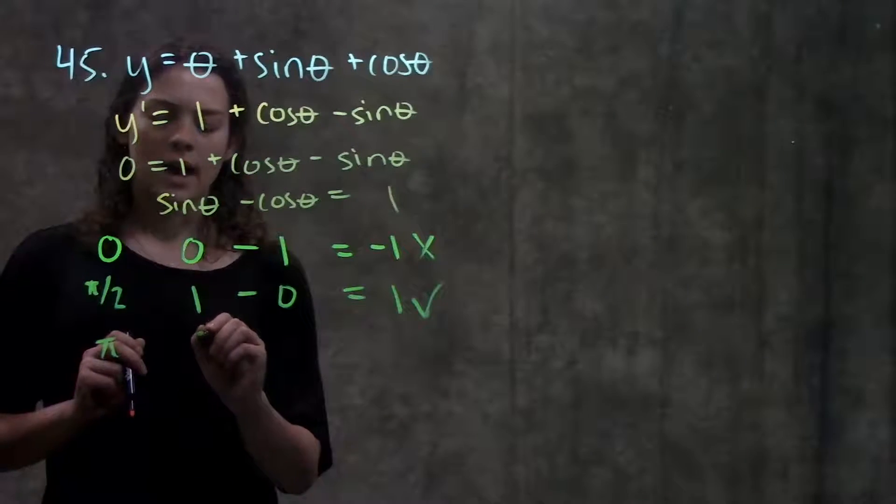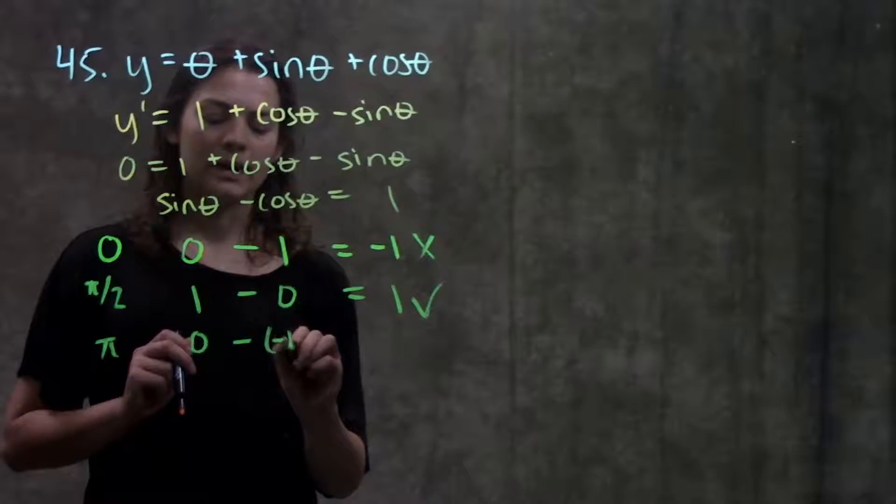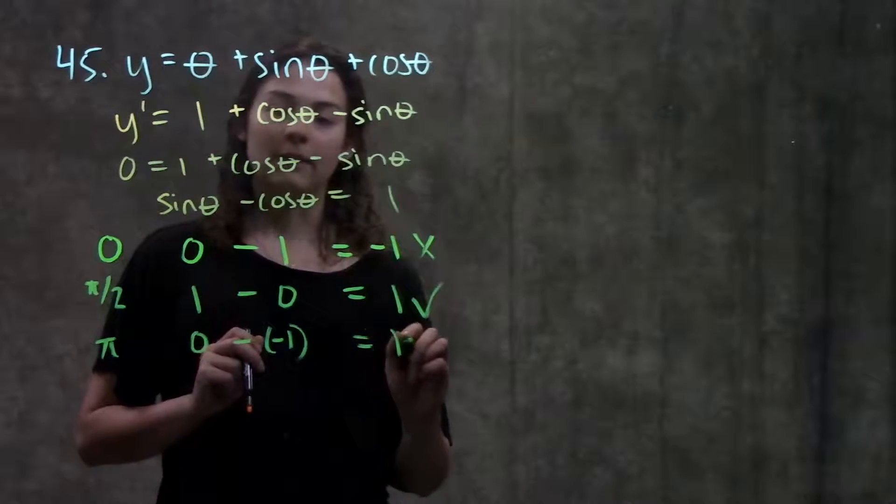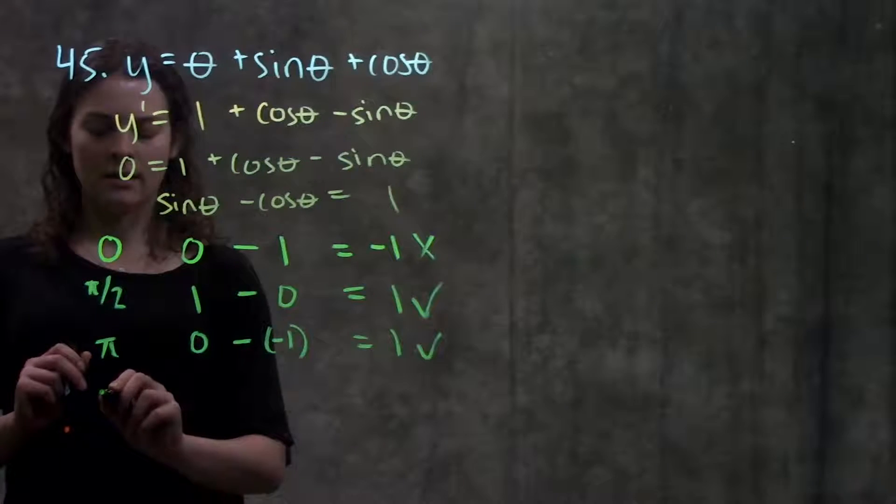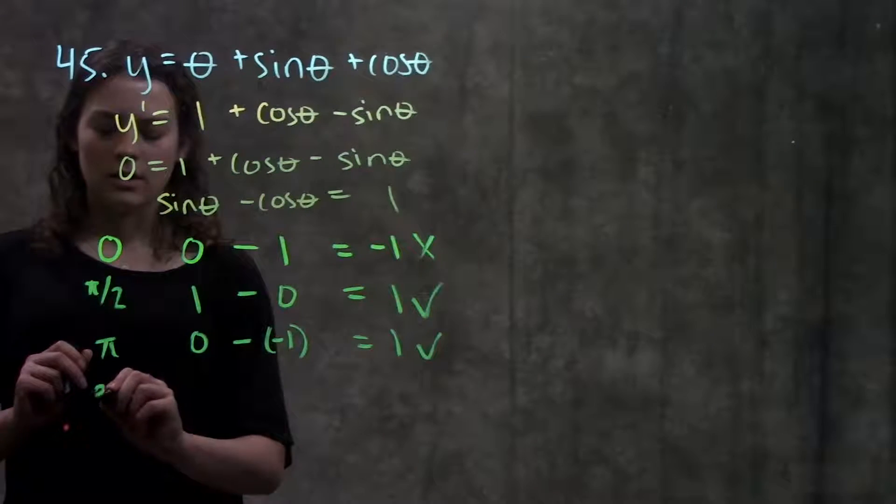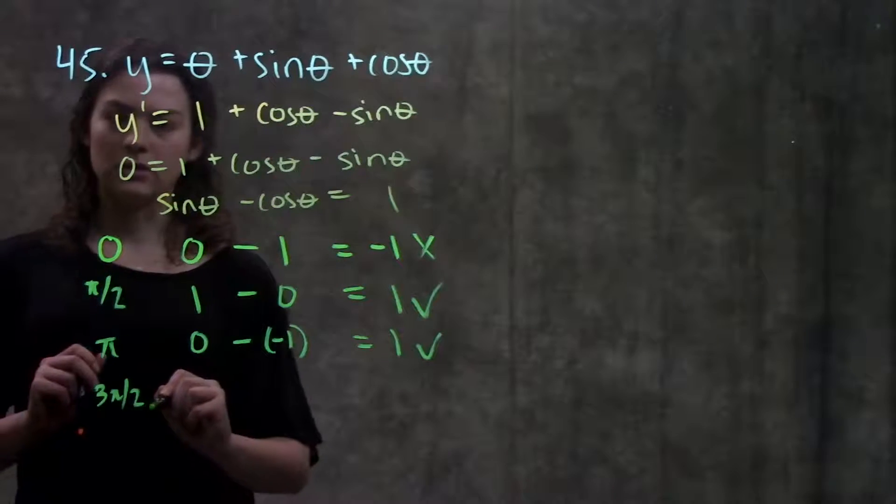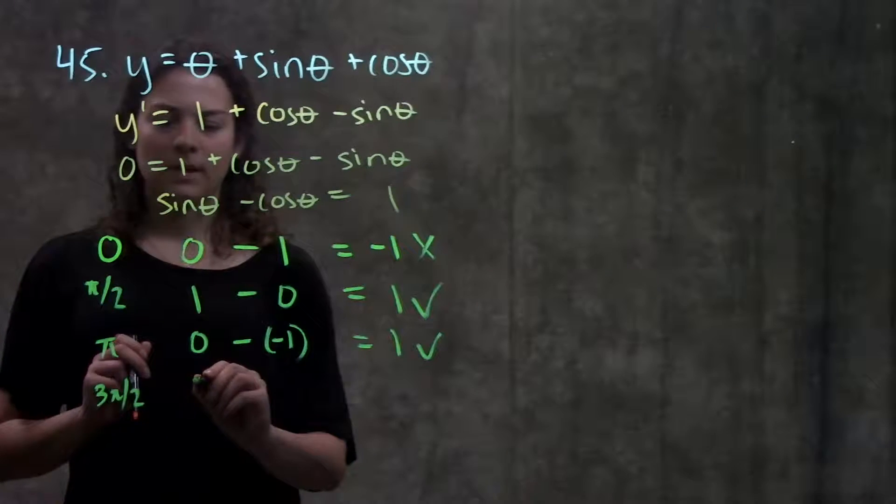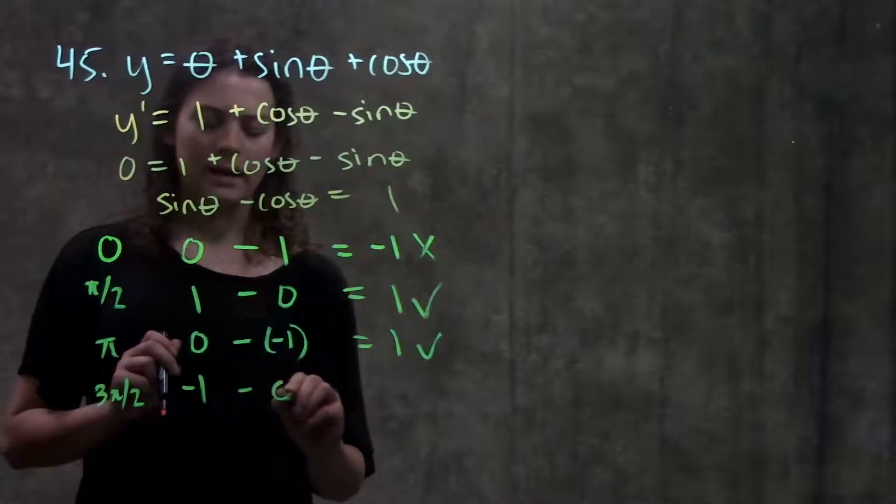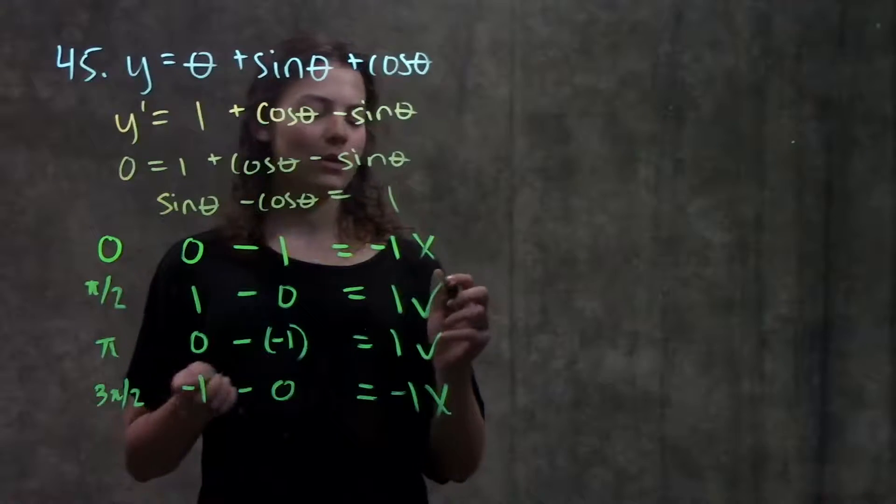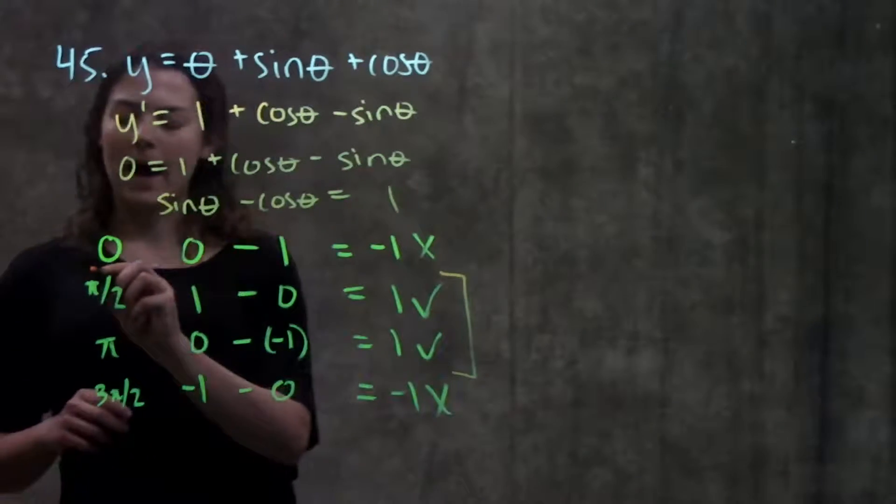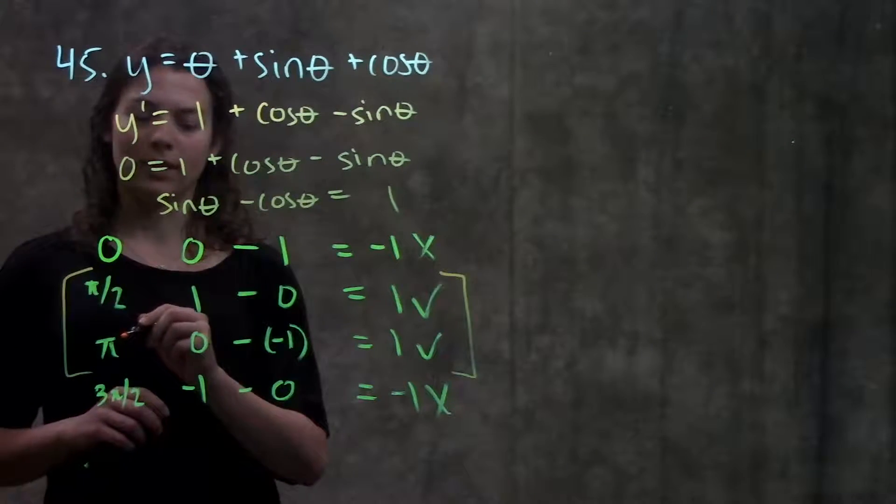Now we try pi, I have zero for sine minus a negative one for cosine at pi, gives me one, that works. And my last angle is three pi over two, and that leaves me with sine is negative one, minus zero, negative one, that doesn't work. Okay so going through all those angles, I know that pi over two and pi are my critical points.